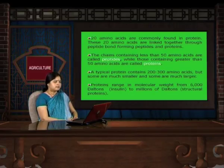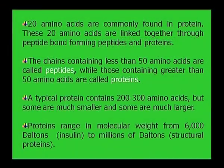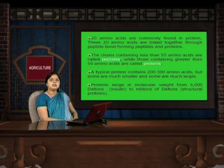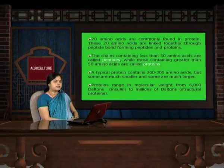Proteins are made up of amino acids. There are 20 amino acids commonly found in proteins. These 20 amino acids are linked together through peptide bonds forming peptides and proteins. These 20 amino acids take part in the synthesis of a variety of proteins.